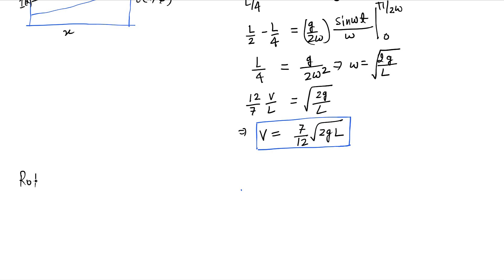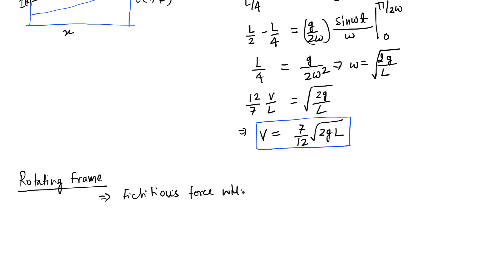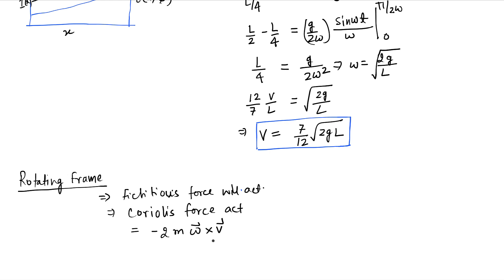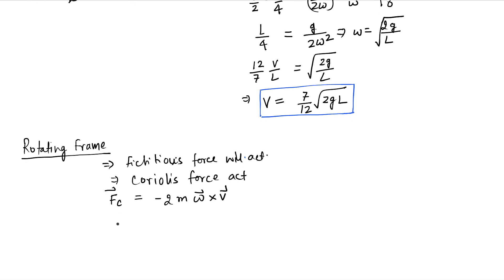Let's consider the rotating frame, where the observer is sitting on the rotating rod itself. In this case, fictitious forces will act. There is a force called the Coriolis force that acts, given by 2*m*(omega × V), where omega and V are vectors. The Coriolis force is perpendicular to both omega and V.